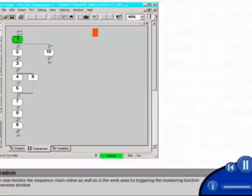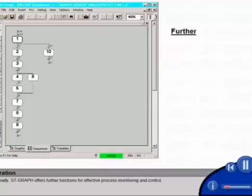You can now monitor the sequence chain online as well as in the work area by triggering the monitoring function in the overview window. Additionally, S7 graph offers further functions for effective process monitoring and control.